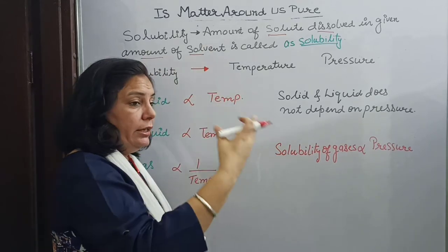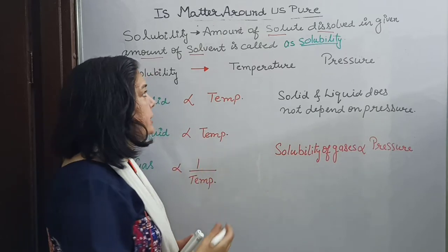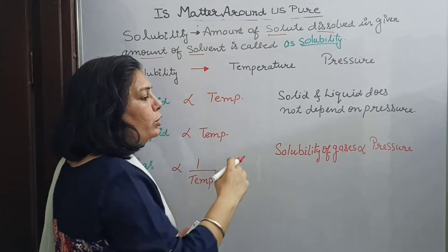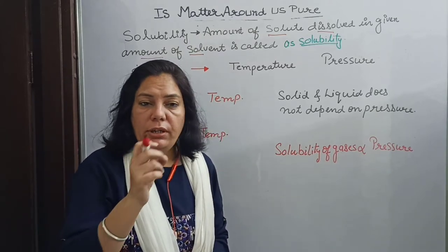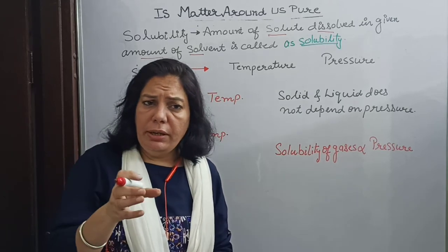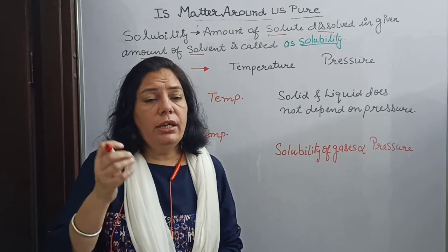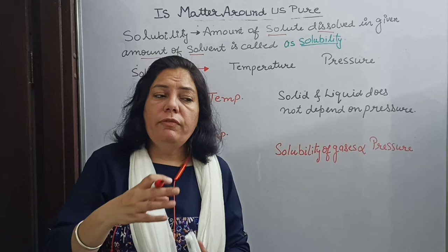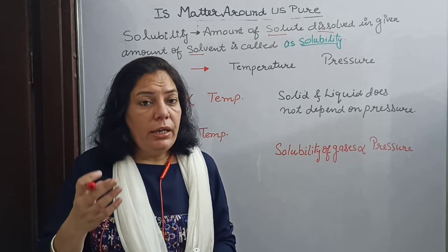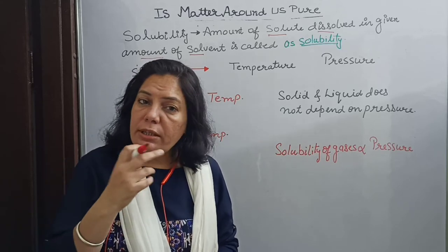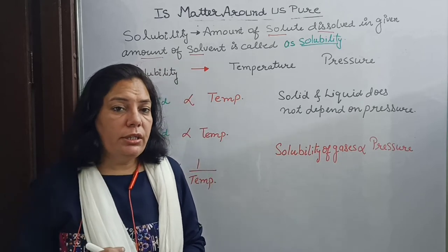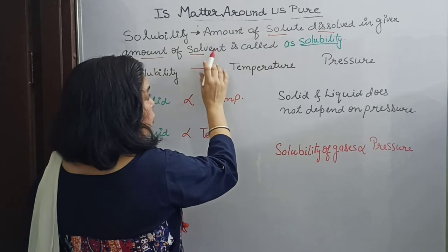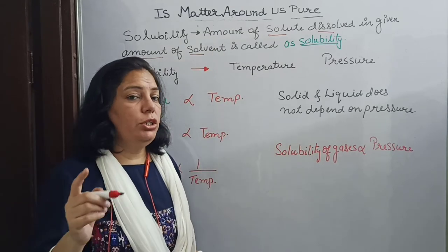By increasing the amount of solvent, solubility can be increased, and by decreasing the amount of solvent, solubility can be decreased. The second factor is temperature. It is easier to dissolve sugar in hot water than in cold water, because as temperature increases, solubility also increases, and as temperature decreases, solubility also decreases. The amount of solute dissolved in a given amount of solvent at a given temperature is called solubility.